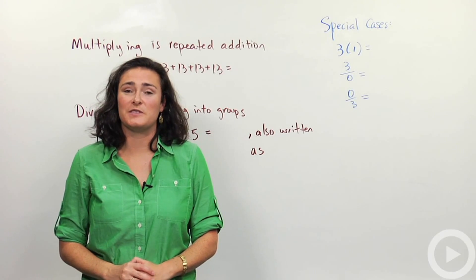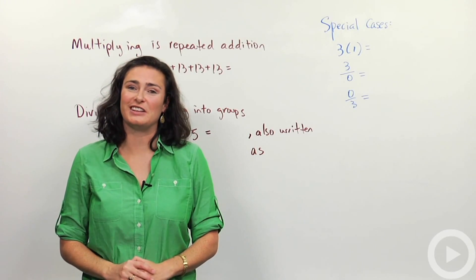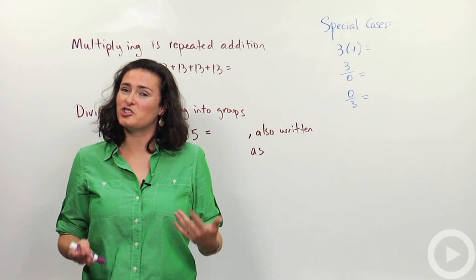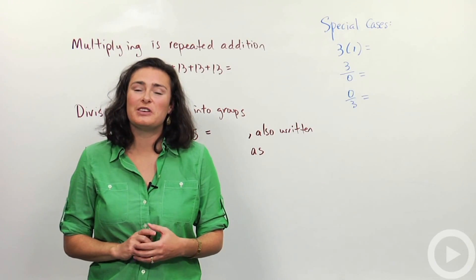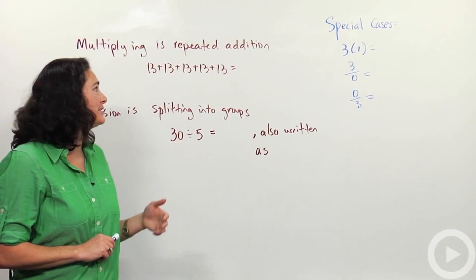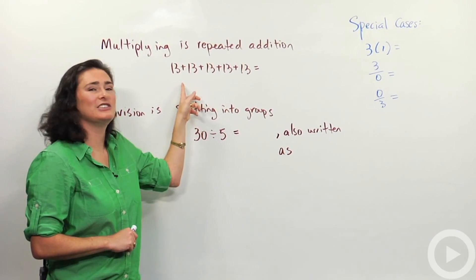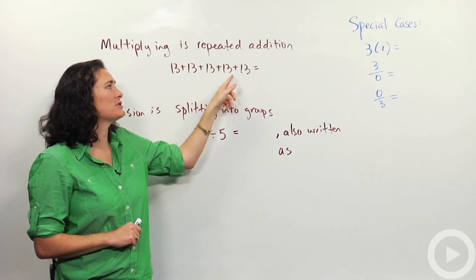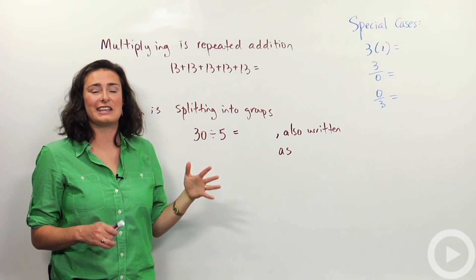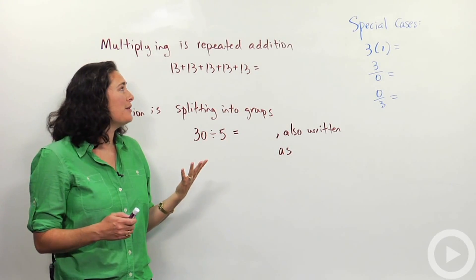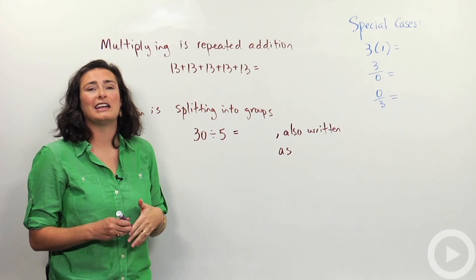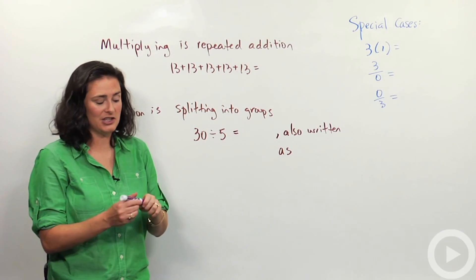We're going to talk about the concepts of multiplication and division. The nice thing about multiplication is it's actually a shortcut for something else — multiplication is a shortcut for repeated addition. Here's what I have on the board to illustrate that. Let's say I was asked to do 13 plus 13 plus 13 plus 13 plus 13. You'll notice that's all 13's being added together — the same value. So rather than having to do five separate numbers added together, I can do a shortcut, and that's what multiplication is.